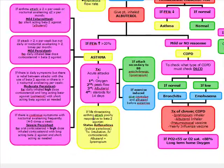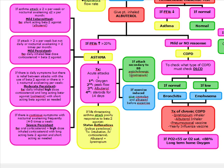If the asthma attack is life-threatening and poorly responsive to beta-2 agonists, it's known as status asthmaticus. Look for pulsus paradoxus in this patient. Treatment of status asthmaticus is intubation, IV corticosteroid, albuterol, plus ipratropium. If the asthma attack is secondary to beta-blockers, give an anticholinergic such as ipratropium. If exercise-induced, give prophylactic cromolyn and albuterol before the patient exercises.